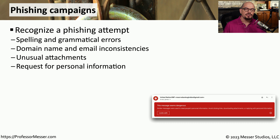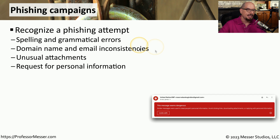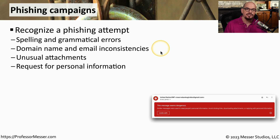We want our users to recognize when a phishing link might be inside of an email. They should be looking for any spelling or grammatical errors within the message itself and within the link they're clicking. We want users to look at the domain name associated with that link and check for inconsistencies in how the email is constructed. There might be unusual attachments, and we should see if the email is requesting any personal information or login credentials.